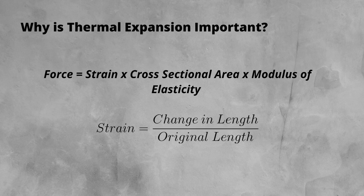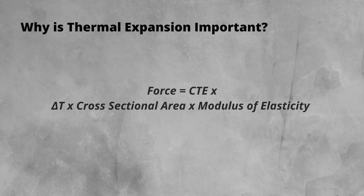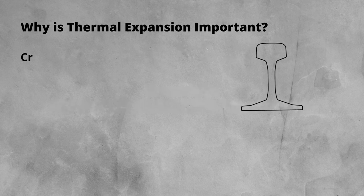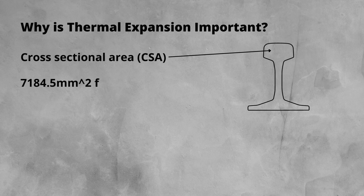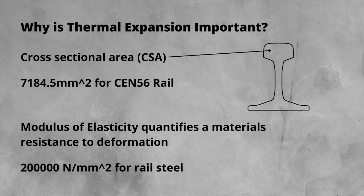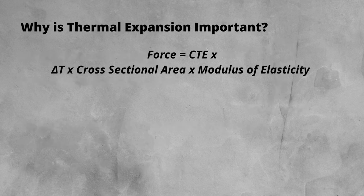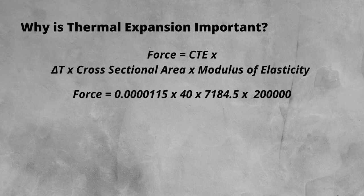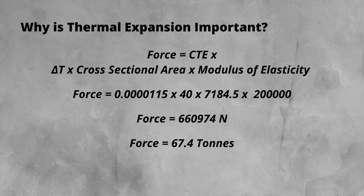Strain is a measure of how much a material deforms. It is calculated by the change in length over the original length. Through the wonders of maths, we can sub in the coefficient of expansion times by the change in temperature to make a formula generic for use in a number of different situations. The cross-sectional area is an area of a slice of the rail. If we take 756 or 113 pound rail, it is 7184.5 millimeters squared. Lastly, the modulus of elasticity, also known as Young's modulus — it is a property of the material that quantifies a material's resistance to deformation when force is applied to it. Plugging in the numbers gives us a force of 660,974 newtons. Converting that into tons gives 67.4 tons of force. That's a pretty big number.